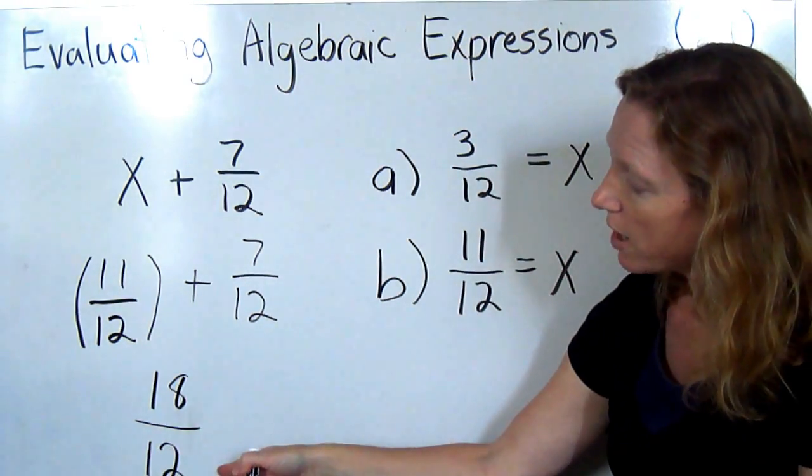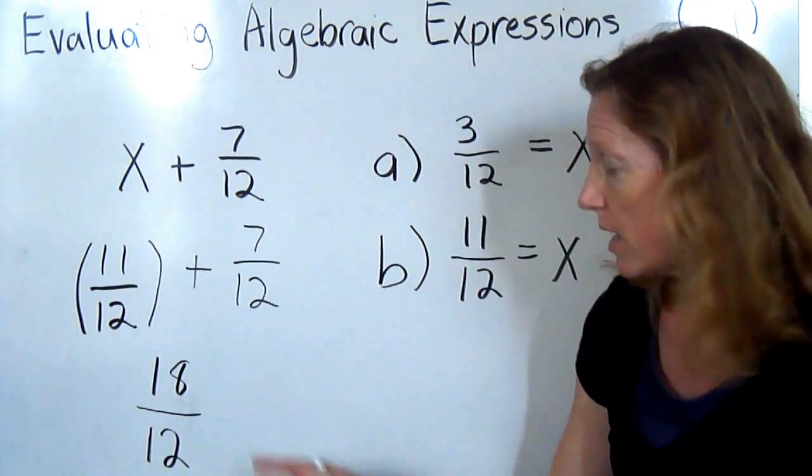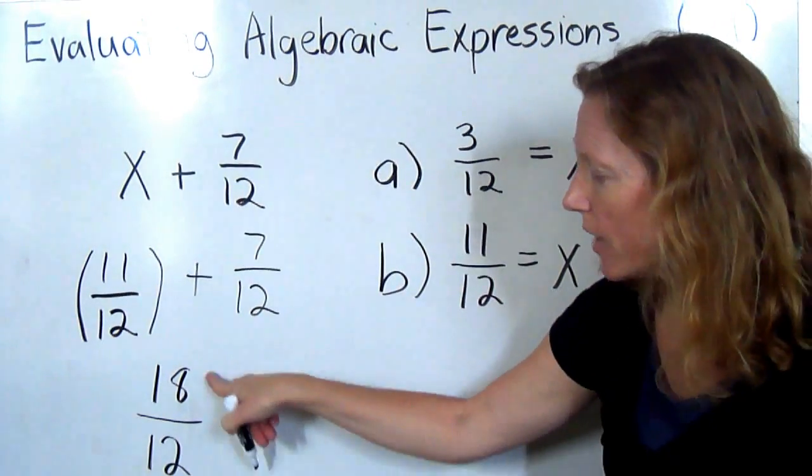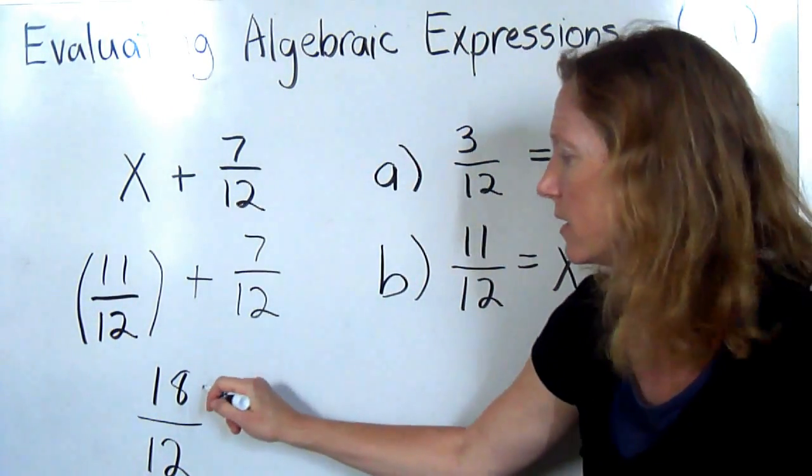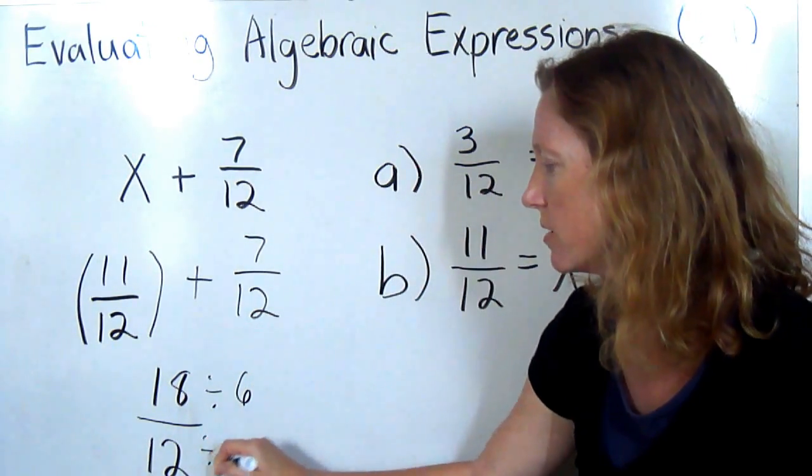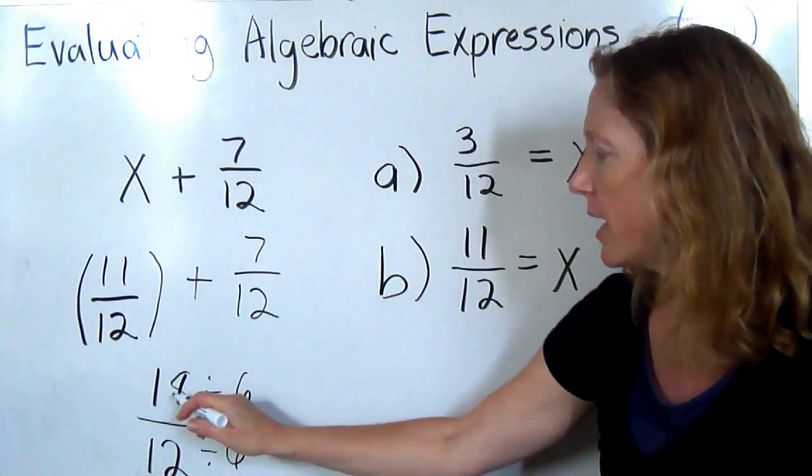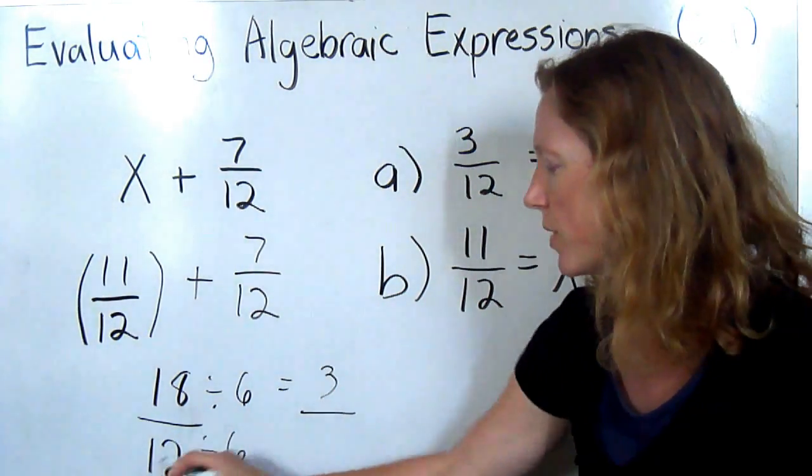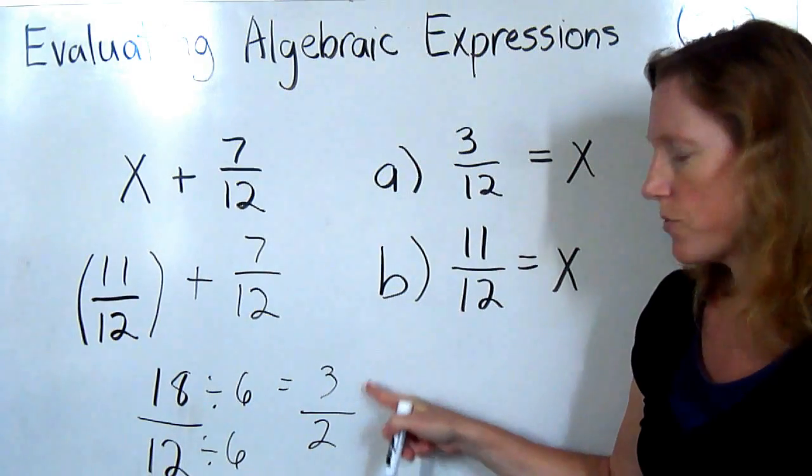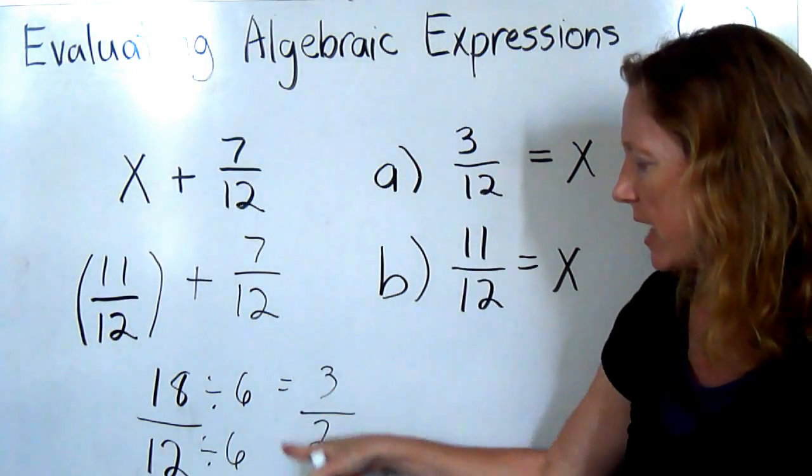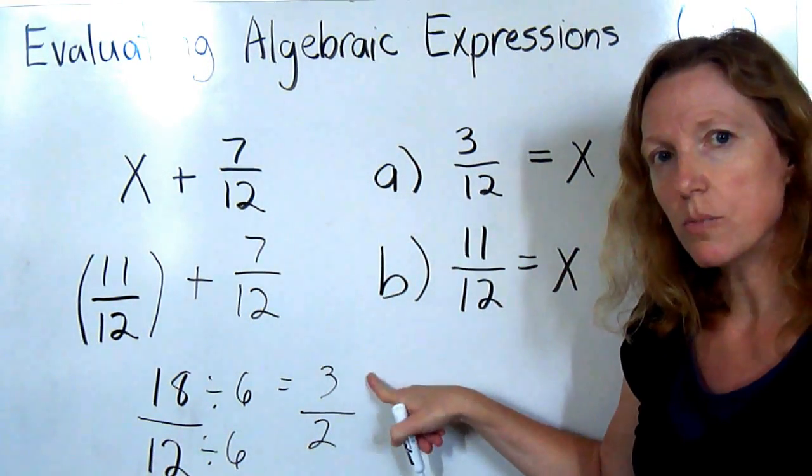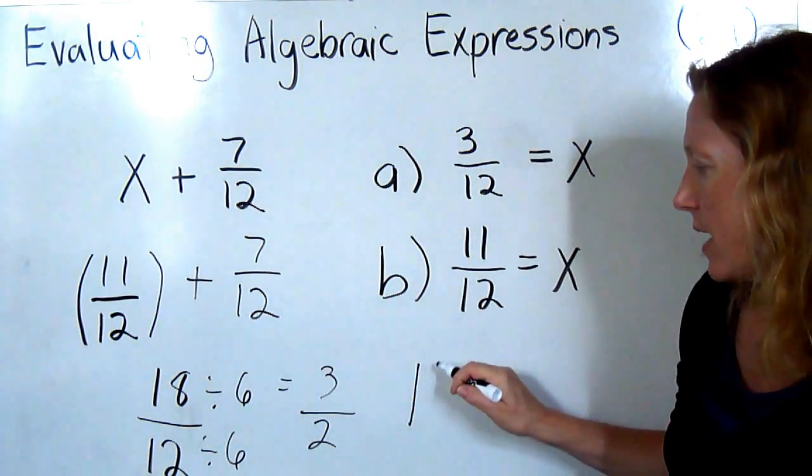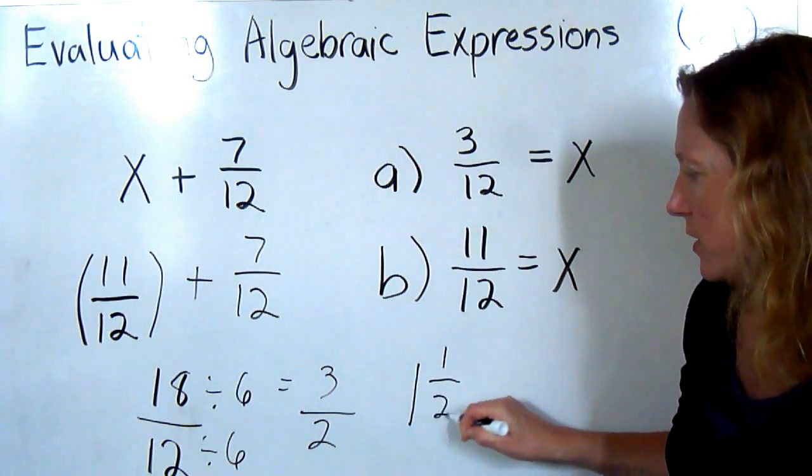Now 18 over 12, I see I have an improper fraction. I could also simplify 18 and 12, because they have a common factor. I think I'm going to simplify first, and then I'll see about changing my improper fraction into a mixed number. 18 divided by 6 is 3, and 12 divided by 6 is 2. I have 3 over 2. Now I'm going to go ahead and take my improper fraction, since the numerator is greater than the denominator. How many twos will go into 3? 1, and I would have 1 left over. 1 and 1 half.